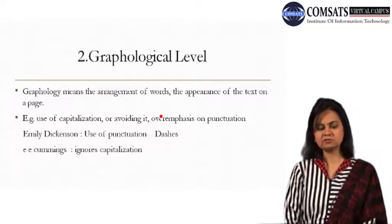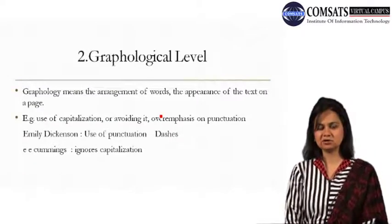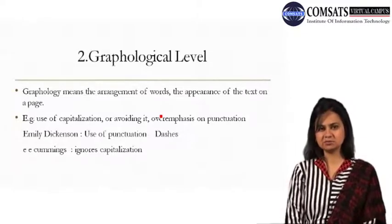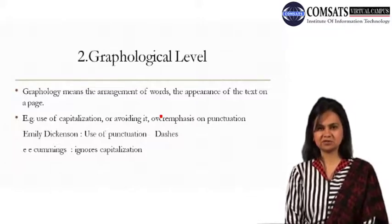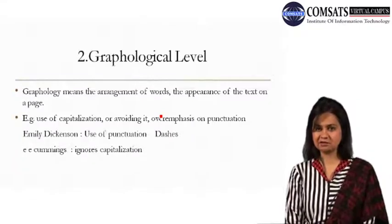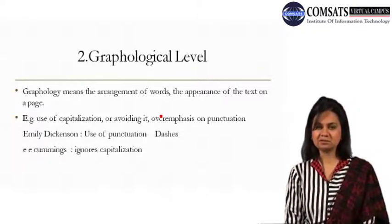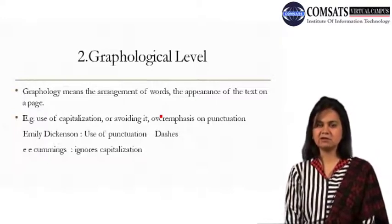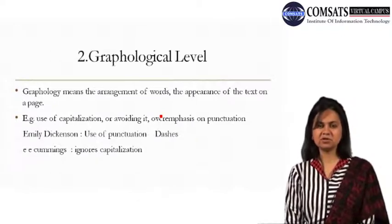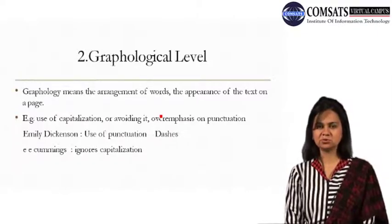The second level we observed was the graphological level. As the word encompasses 'graph,' graphology refers to the appearance of a text — how a text is constructed as a visual or visible picture. Writers experiment with the graphology of words: they may use capitalization to a greater extent, or choose to ignore capitalization in their poems.